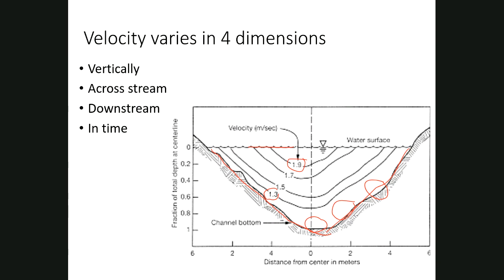We have vertical variation, but our channel also has banks, creating cross-stream or lateral variation. If your stream channel is curvy, that gives a different velocity pattern than a straight channel. Velocity also varies in a downstream direction and over time. The goal of the next few slides is to appreciate why it's so hard to get the velocity number we need to measure streamflow, and why even in 2020 we are reliant on brave hydrologic technicians to go out in terrible weather to get high-flow measurements.